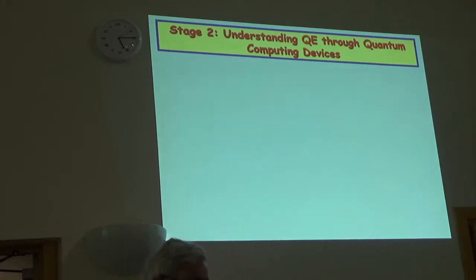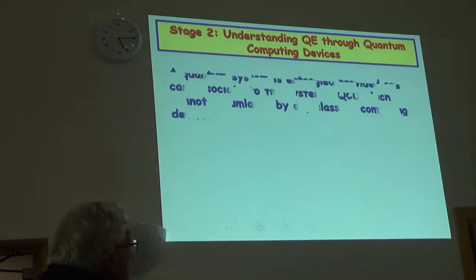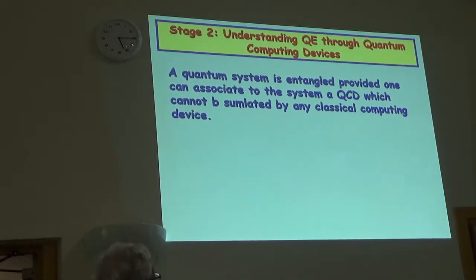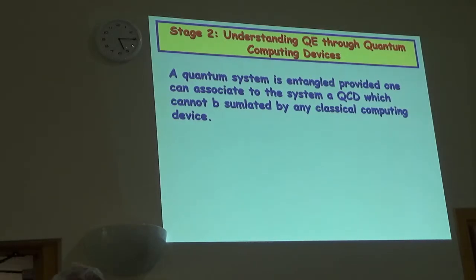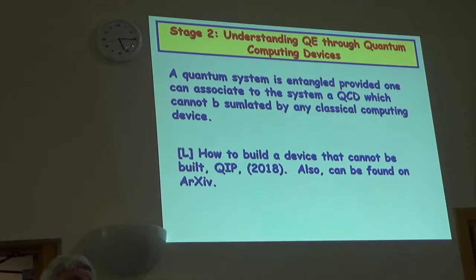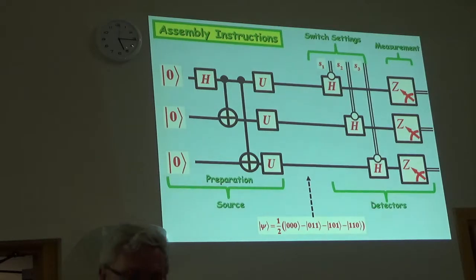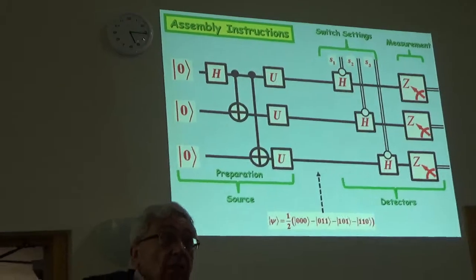Another stage, which is kind of interesting, which I find interesting, understanding quantum entanglement through quantum computing devices. And essentially, this was a talk I gave at Fortonovo. And a quantum system is entangled, provided one can associate with the system a quantum computing device which cannot be simulated by any classical device whatsoever. Which is sometimes hard to prove. This is one way of getting at this. And this appeared in Fortonovo procedures and also in the following information processing. And it's on the archive. And here's the example. This device cannot be simulated by any classical device. In our paper, we actually prove this. Therefore, we have quantum entanglement. This is a certain measure. And I have a PhD student that's working on this, associating different computing devices with various entangled states.